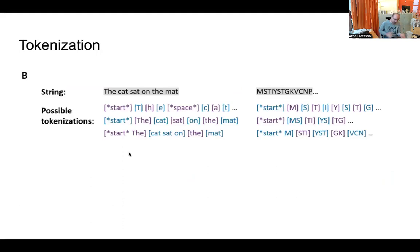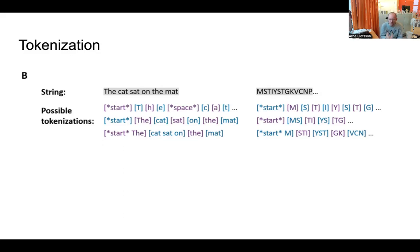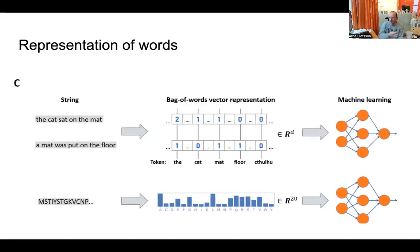The first thing you have to do is tokenize things. You could do it at the individual letter or word level. Most text methods work at the word level and even group words together — for instance, 'cat' and 'feline' might be treated as the same thing. For proteins, you typically do it at the amino acid level, though you could also do it for pairs. In practice, most things use single amino acid tokenization.